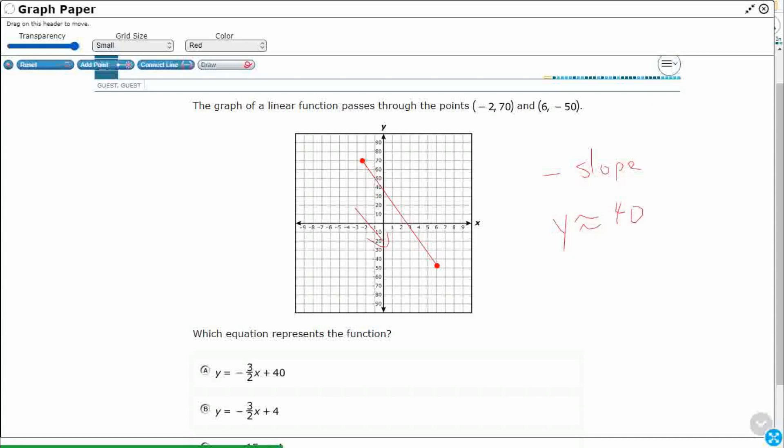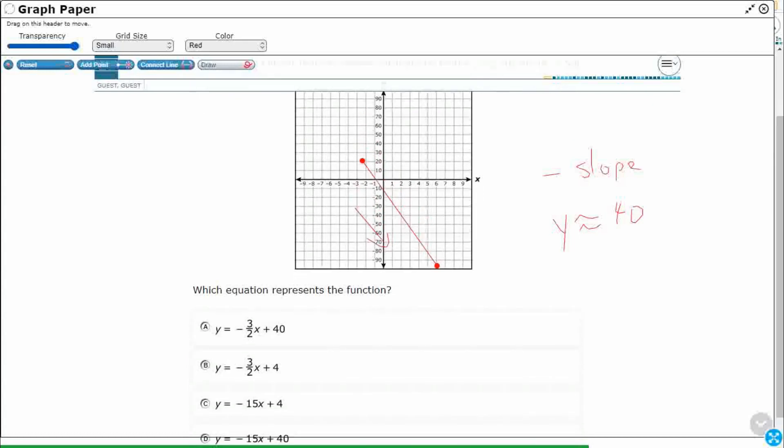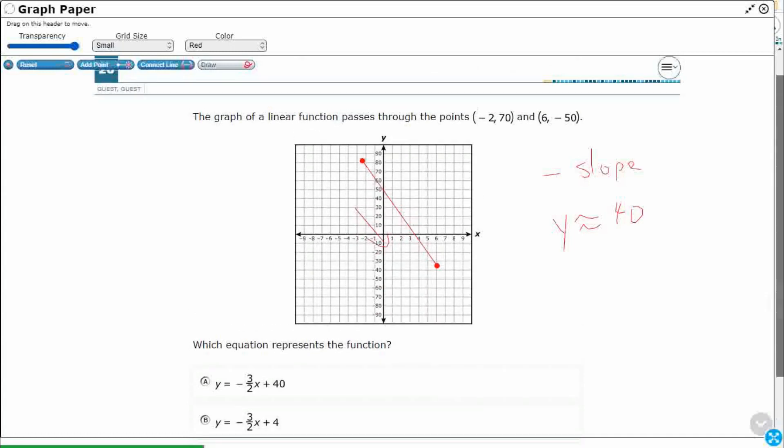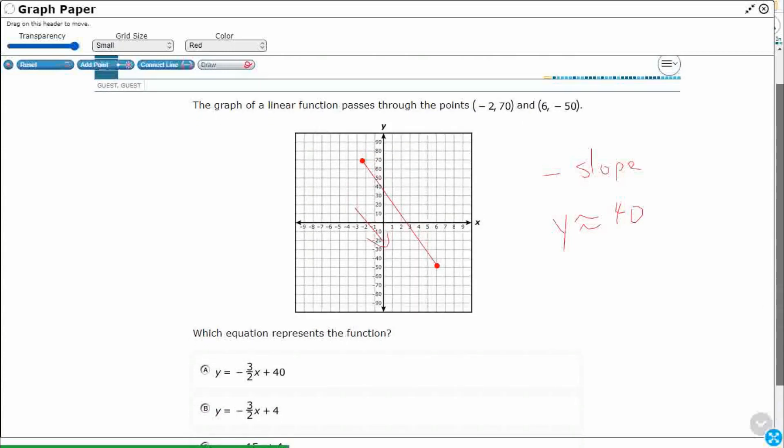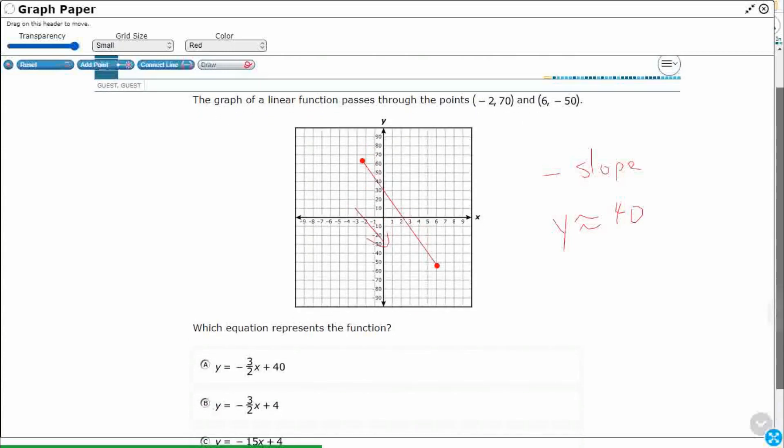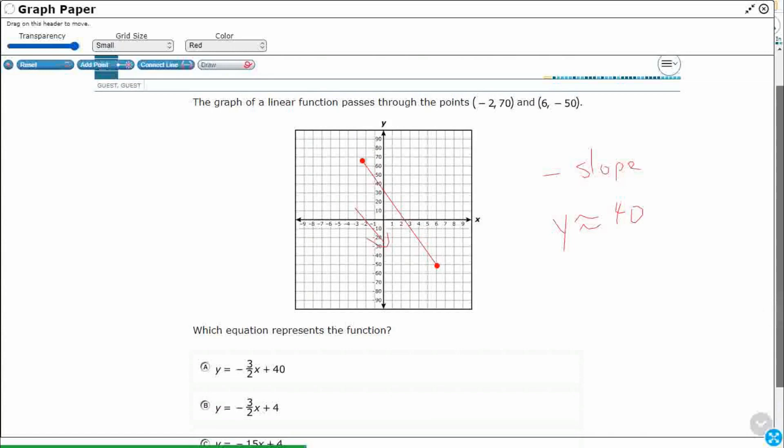A negative slope, because it is moving down, and it looks like my y-intercept is going to be about 40. Let's see, do we have any of them that look like that? A looks like it might be a possibility, and D looks like a possibility. Right now, A and D, just by graphing this, look like possibilities. So, how do we know for sure?